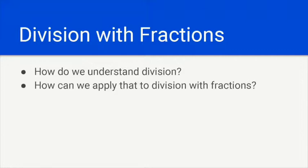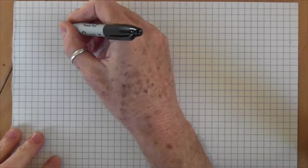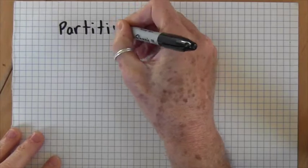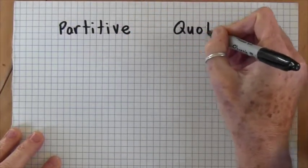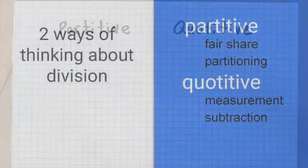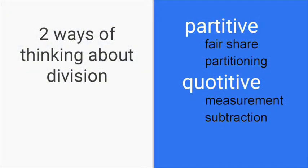There are two ways of thinking about division: partitive and quotative. Partitive division is also called fair share or partitioning division, and quotative division is also called measurement or repeated subtraction division.